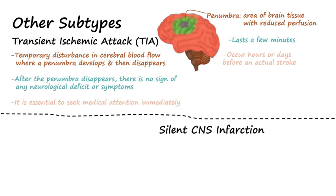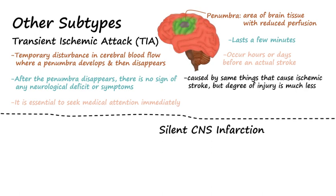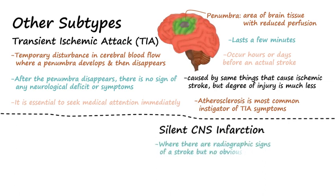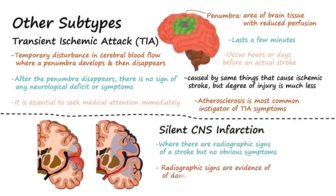TIAs are caused by the same things that cause an ischemic stroke, but the degree of injury is much less. Atherosclerosis is the most common instigator of TIA symptoms. A silent CNS infarction is where there are radiographic signs of a stroke, like on MRI or CT scans, but no obvious symptoms. Individuals who experience a silent stroke are often surprised to be told there are radiographic signs of damage to brain cells.